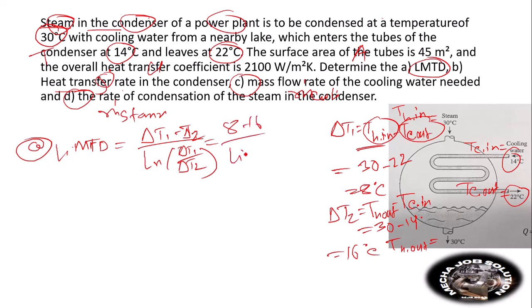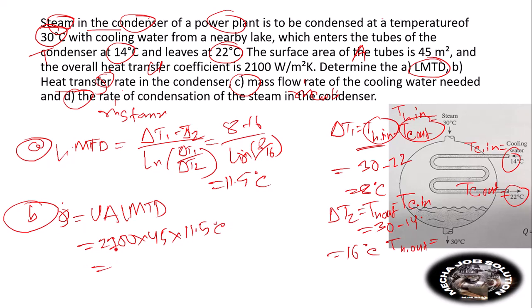For part b), the heat transfer rate Q equals U times A times LMTD, which is 2100 times 45 times 11.5°C. After calculation, we get 1.087 × 10⁶ watts, or 1087 kW.